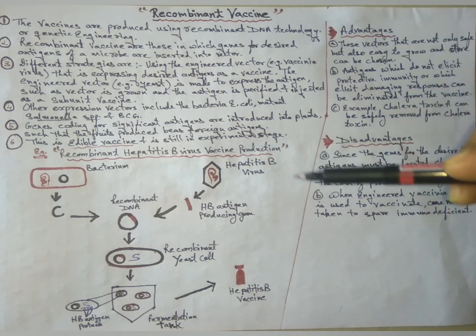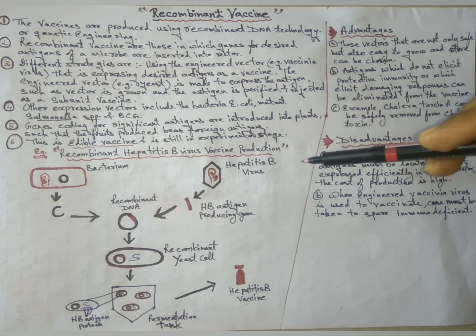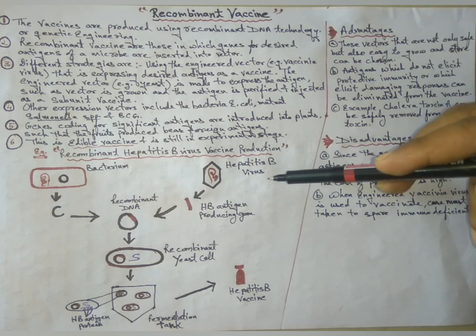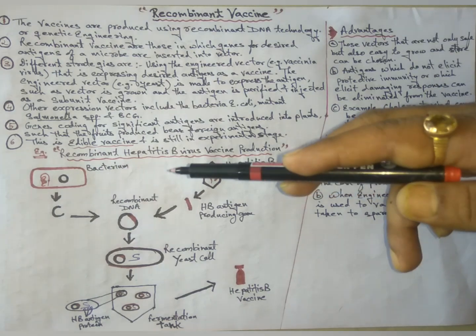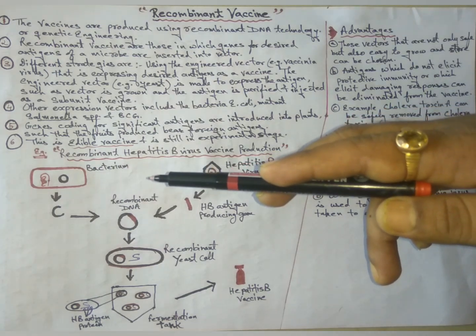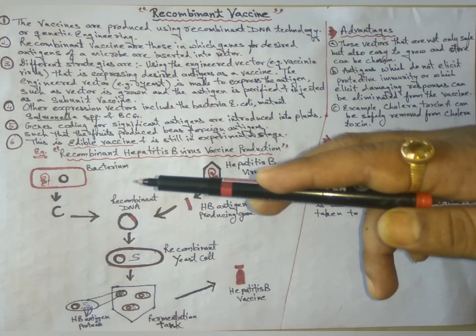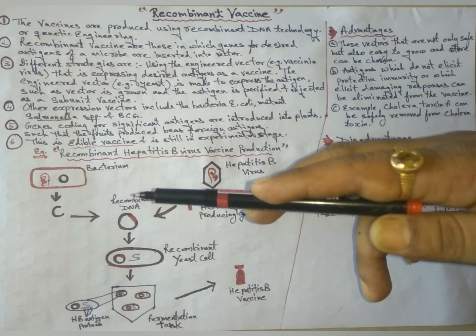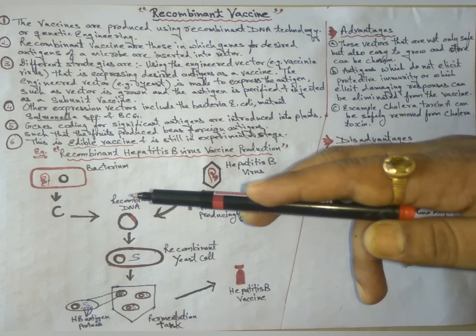First step is the isolation of hepatitis B antigen-producing genes from the hepatitis B virus. And then the plasmid DNA is extracted from the bacterium and is cut with restriction enzymes to form a plasmid vector.